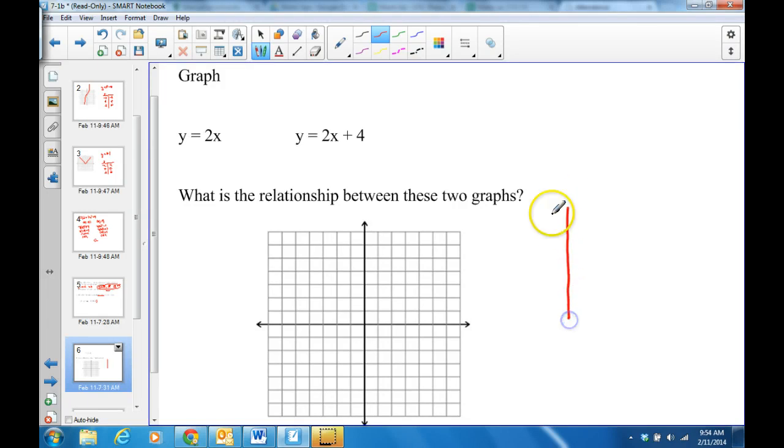So I'm going to use what I would consider a double t-table to find my points for both of these relations. I'm going to pick three points: negative 2, 0, and 2. Those seem to be pretty easy points to use.